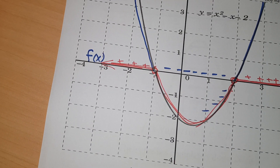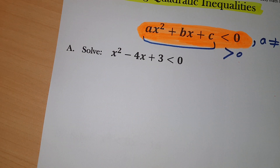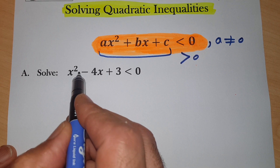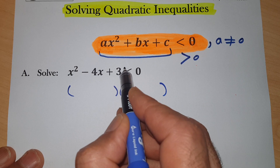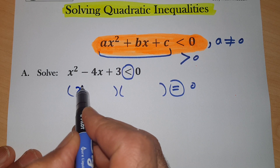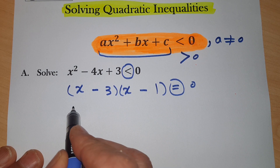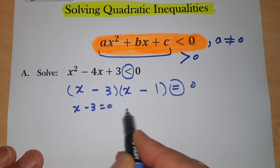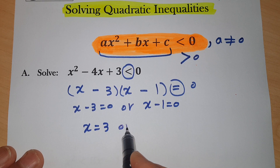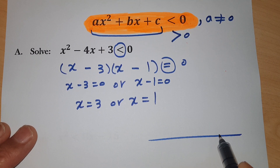Now let's solve the inequality and apply these ideas. To solve the quadratic inequality, factorize and make it equal zero — convert the less-than sign to equals zero. For x² - 4x + 3: that's 3 times 1, both negative, giving (x - 3)(x - 1) = 0. So x = 3 or x = 1. Draw a number line with 1 and 3 marked.